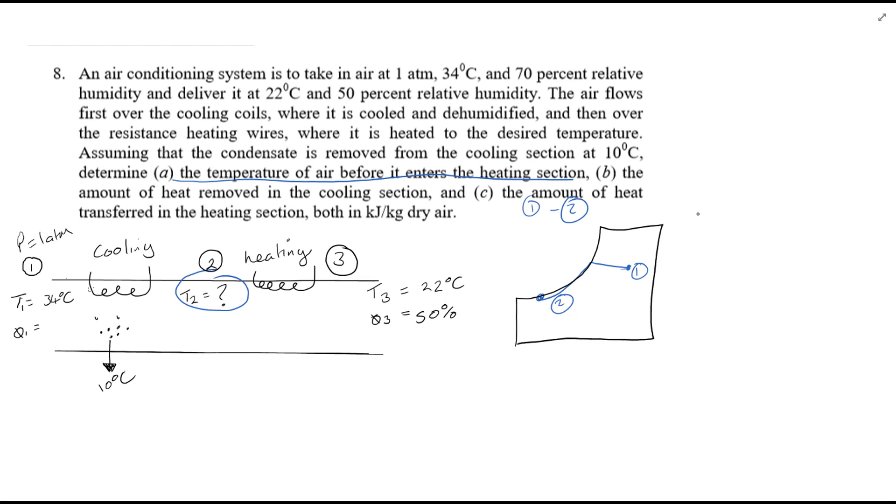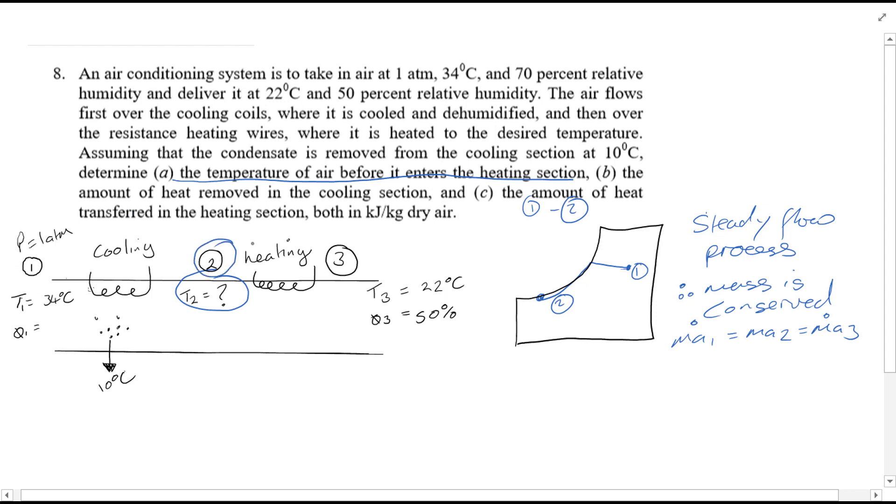Okay, so steady flow process, no work process, therefore mass is conserved. So ma1 equals ma2. Okay, we need to find two values at point two, and then we can use the psychrometric chart to find the temperature at two.